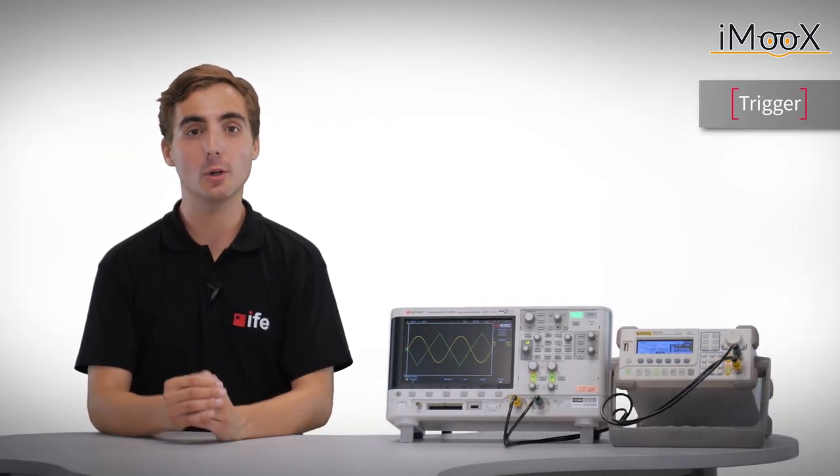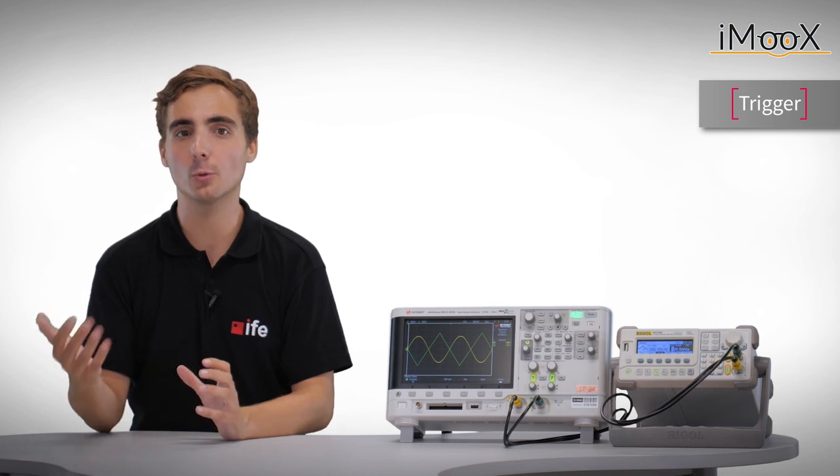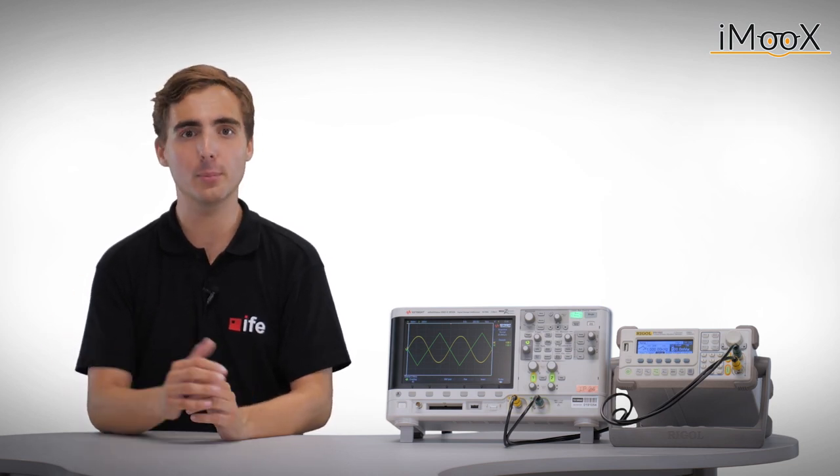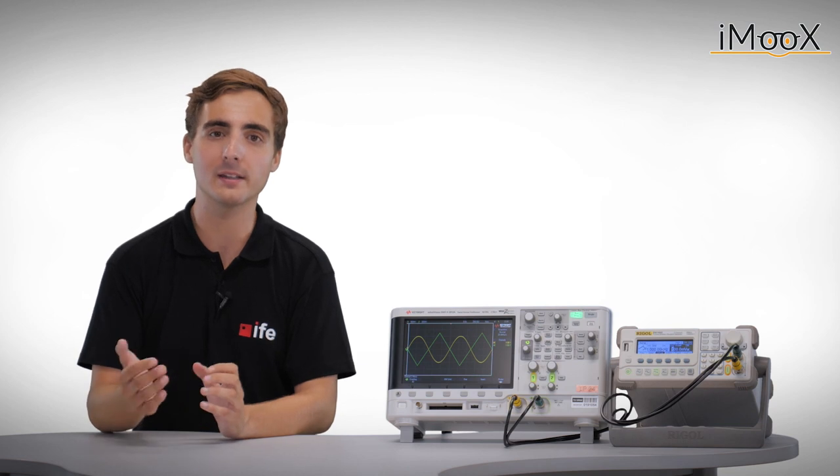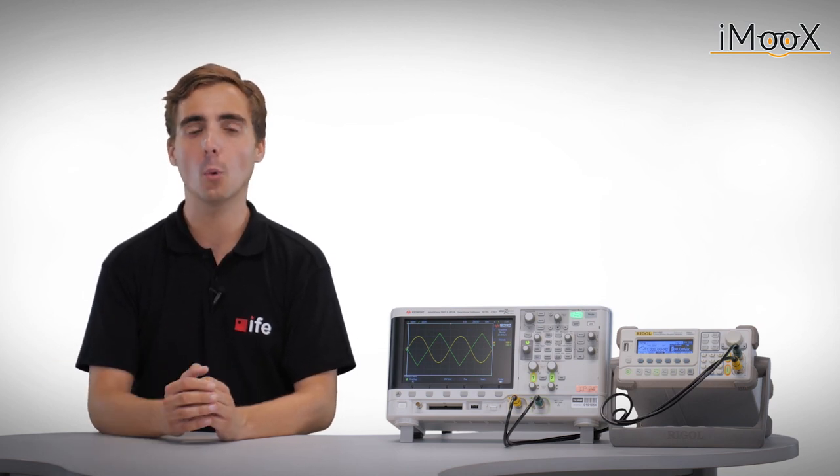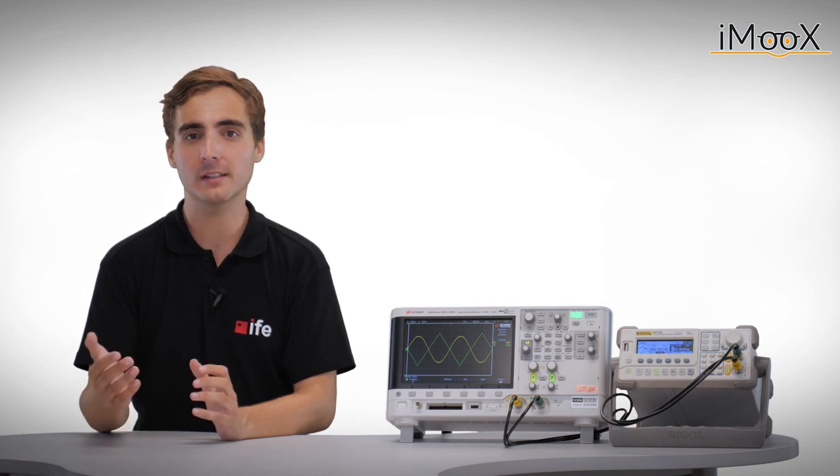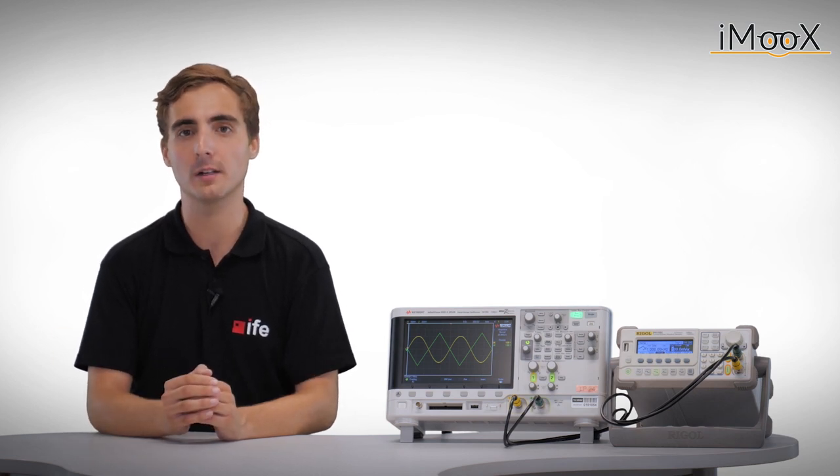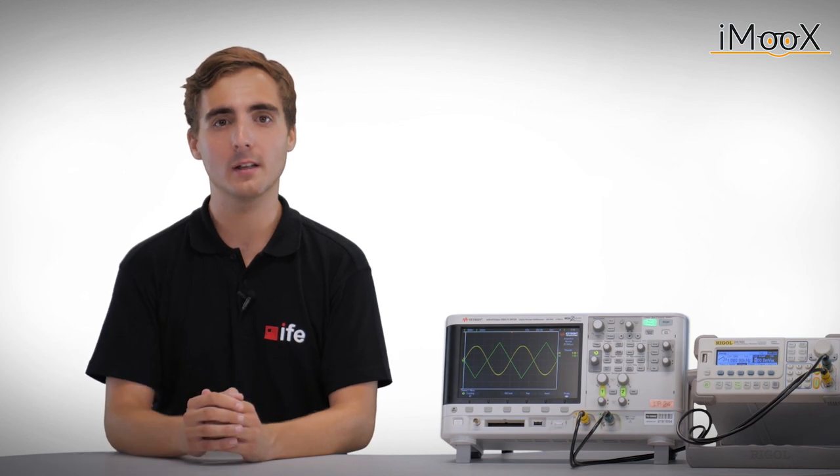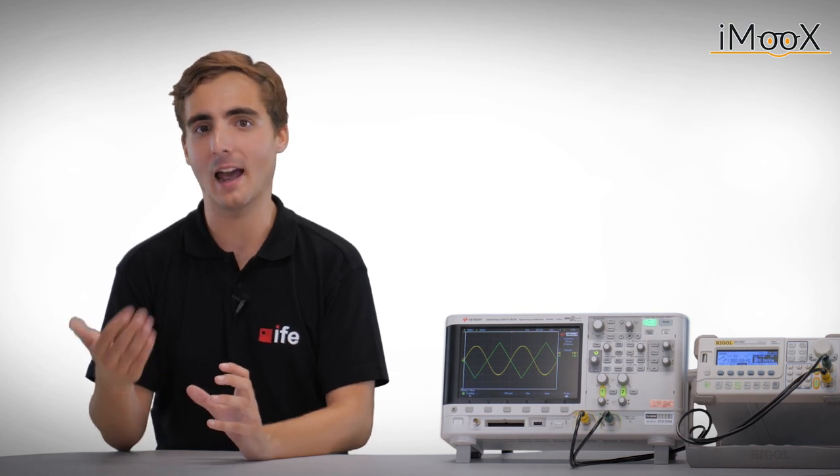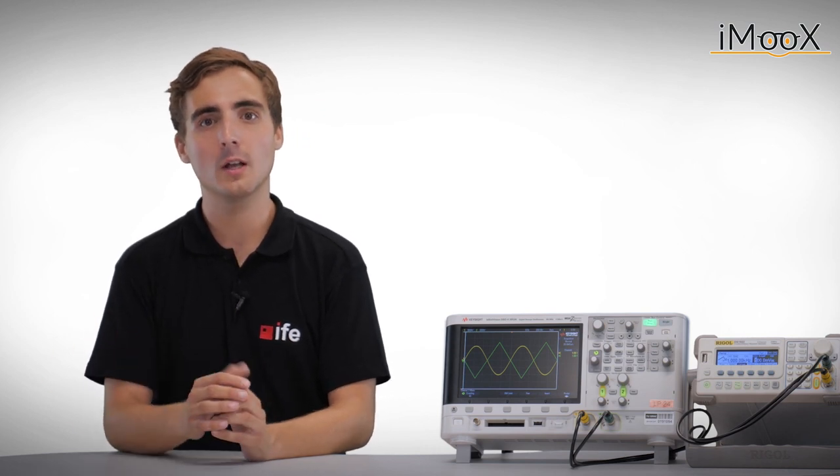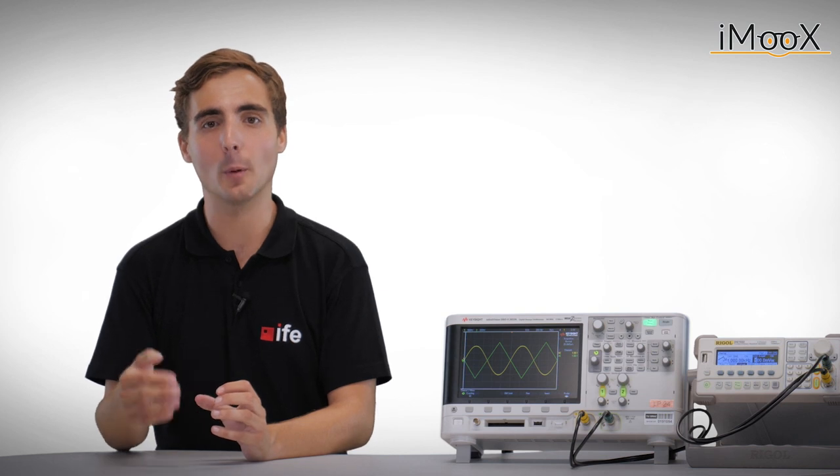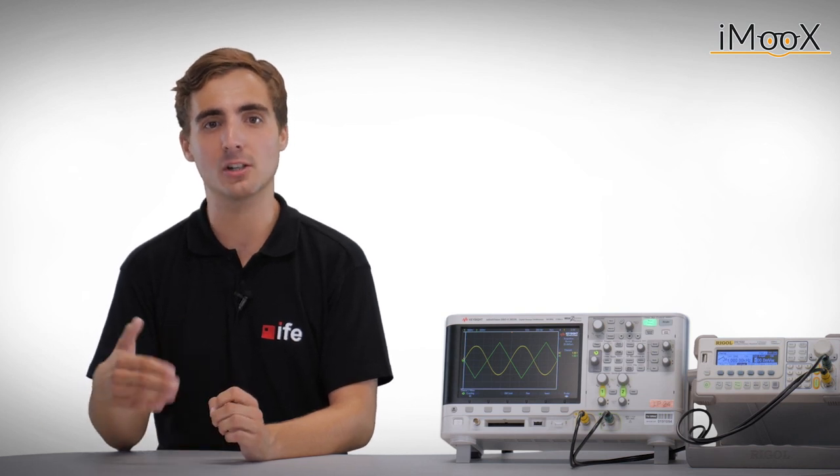Now, we come to a very important topic, which is the so-called trigger of the scope. In the previous examples, we always had a stationary image on the screen. But we have to ask ourselves, why is this the case? How does the scope know when to start a new recording? This can be done by setting appropriate triggers. The recording is triggered when a defined event occurs. In general, there are many different types of events that can be fired depending on the channel signal. In this tutorial, we will focus on the simplest and most commonly used one, the edge type trigger event.